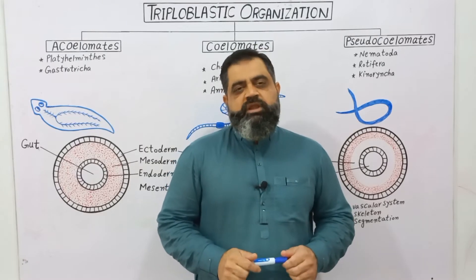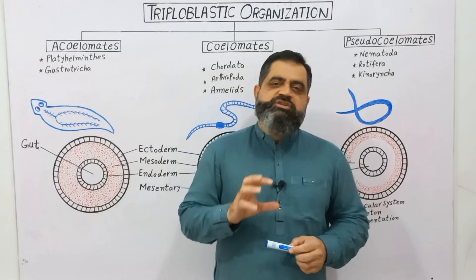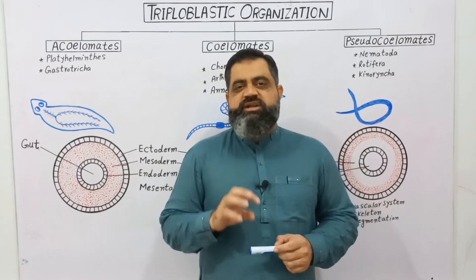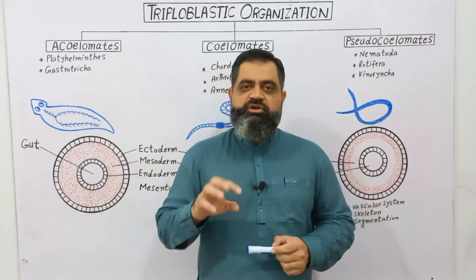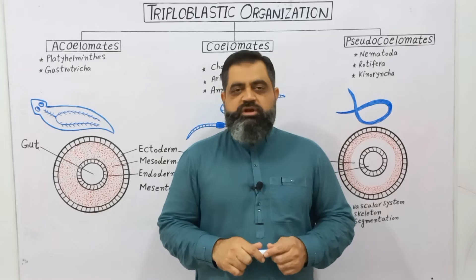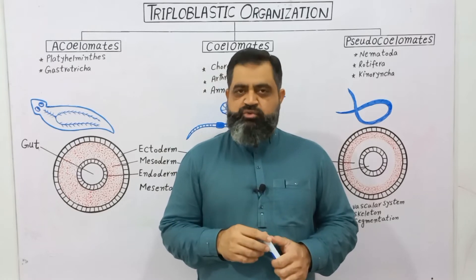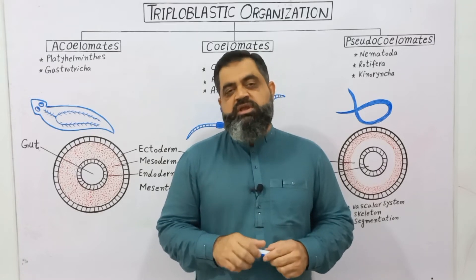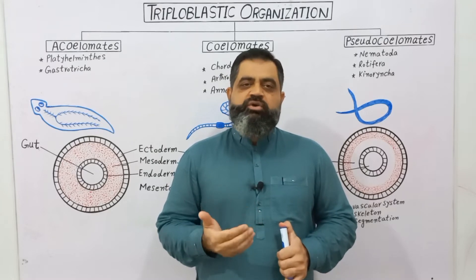In this video lecture we are going to discuss triploblastic organization. In the animal kingdom there are two types of animals: diploblastic animals, which have two body layers — ectoderm and endoderm — and triploblastic animals, which contain three body layers: ectoderm, endoderm, and mesoderm. During development, after embryo cleavage, morula, blastula, and gastulation, three germ layers are formed: ectoderm, endoderm, and mesoderm.